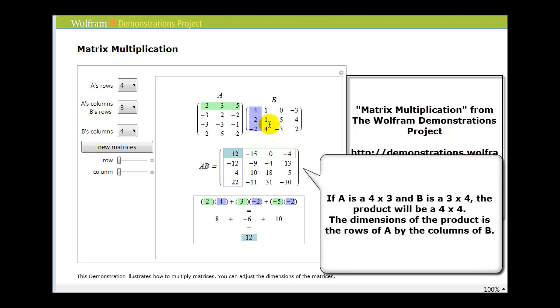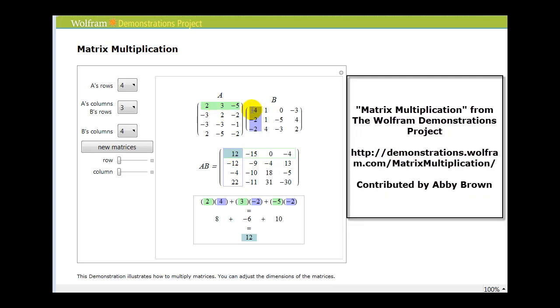Once we determine the dimension of the product, we can pick any element in this matrix. As long as we know the row and column of that element, we know which row to select from matrix A and which column to select from matrix B.